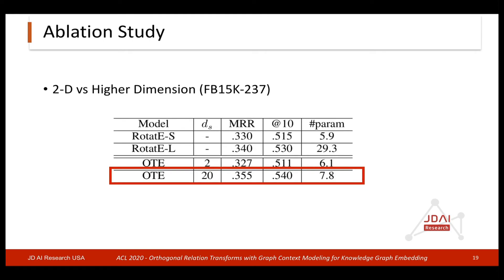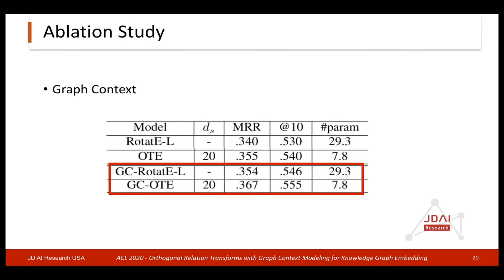This table shows the ablation study on the dimension size for the RotateE model and OTE model. We can see that when we increase the embedding size from 400 (RotateE-S) to 2000 (RotateE-L), the performance only gains a little but the number of parameters quadruples. For our model, we keep the embedding size at 400 and only increase the subgroup size from 2 to 20. So the number of parameters doesn't increase much, but the performance shows a nice gain. This table also shows that adding graph context to both RotateE and OTE helps performance, and our model is better than RotateE with graph context.